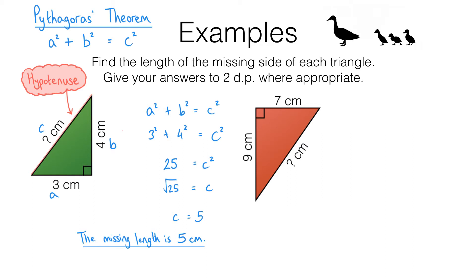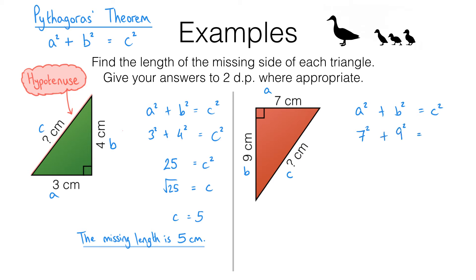Let's move on to the next question. We're looking for the missing length here. Before we get started we need to label our sides A, B and C — start with the hypotenuse and label that one C. The hypotenuse is the longest side, the one opposite the right angle, and the two legs are the ones that meet at the right angle. So I'll label that side C and the other two A and B — it doesn't matter which way round. Using Pythagoras' theorem: A squared plus B squared equals C squared. Substituting the numbers in, I get 7 squared plus 9 squared equals C squared.